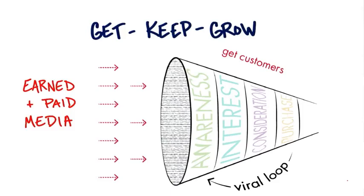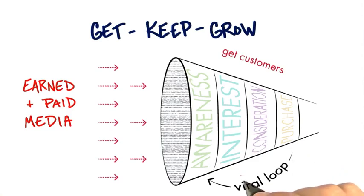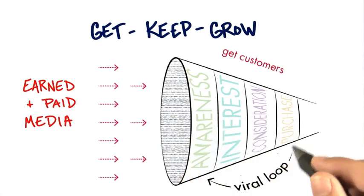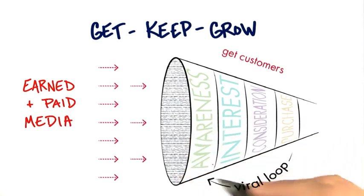In a world where basically all you do is create demand on the left side of the funnel and somebody purchases on the right, you could kind of measure how much it costs to do that. We'll talk about customer acquisition costs a little later, but there's a little magic accelerator on the bottom of these funnels, and that's called the viral loop.